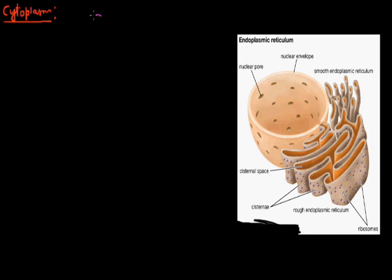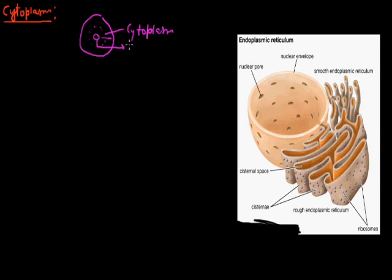This is the cell. This cell is having a nucleus in the center, and between the nucleus and the cell membrane, the liquid present is called the cytoplasm. Inside the cell, the structure is present because of the nucleus. Both combined is known as protoplasm.